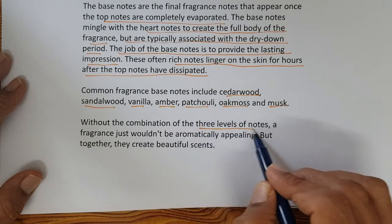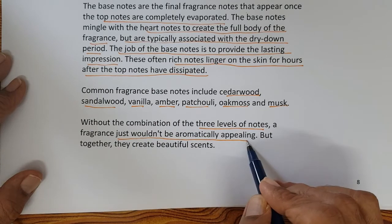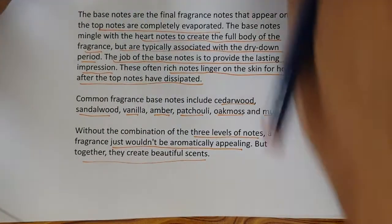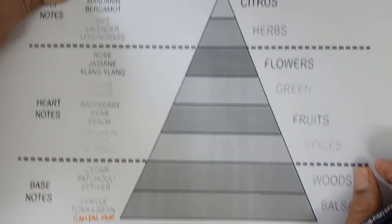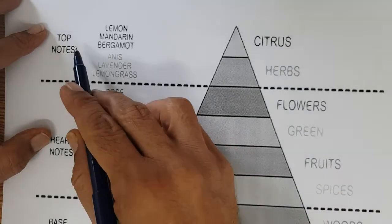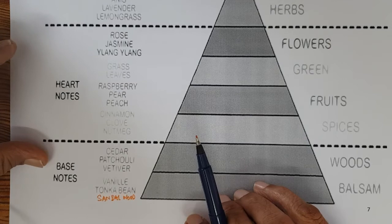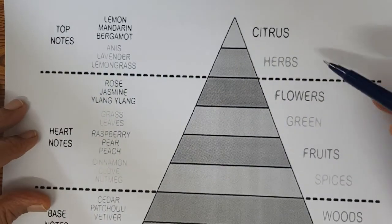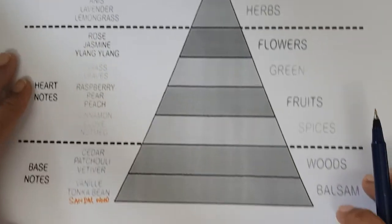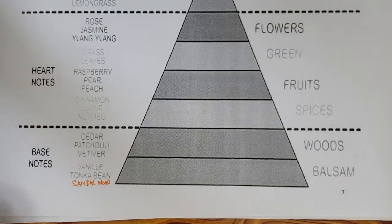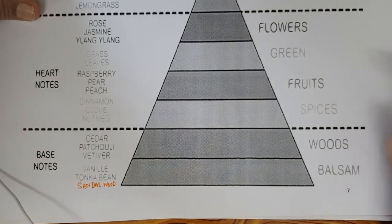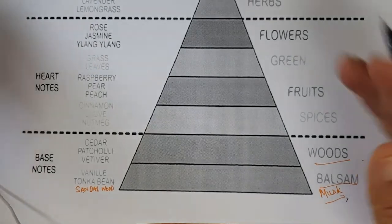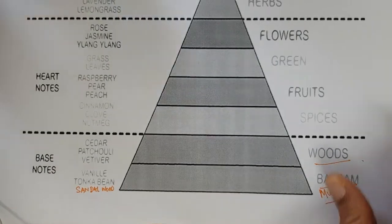Without the combination of all three levels of notes, a fragrance just wouldn't be aromatically appealing, but together they create beautiful scents. Pictorially, these are the top notes, heart notes, and base notes — citrus, herbs, flowers, green, fruit, spices, woods, balsam, and musk. Musk also comes in the base note. This is the pictorial representation of top notes, heart notes, and base notes.